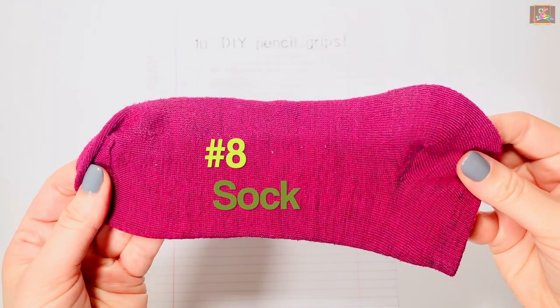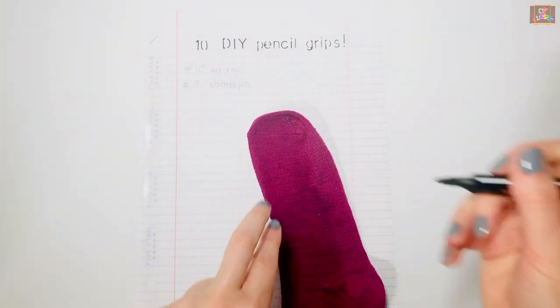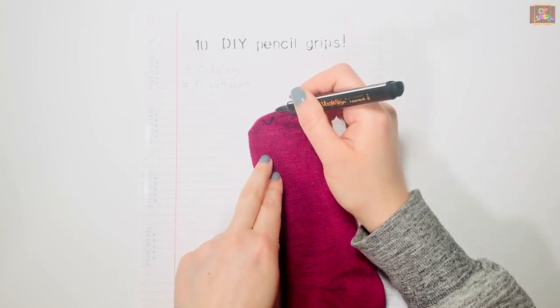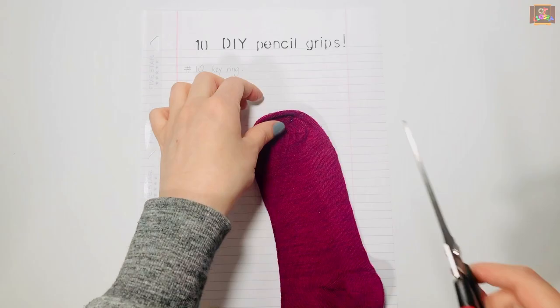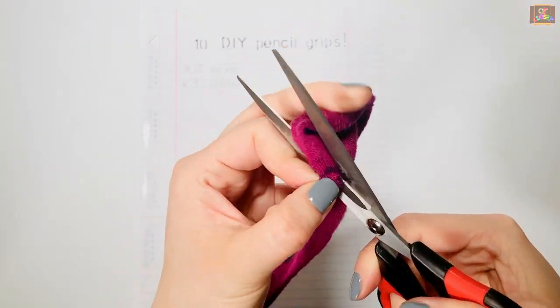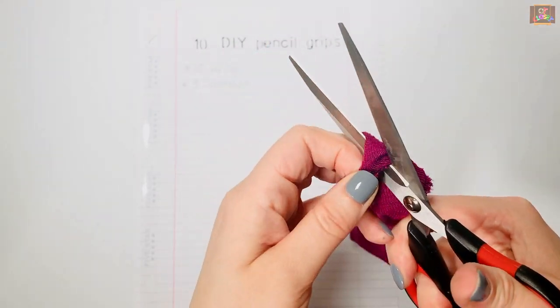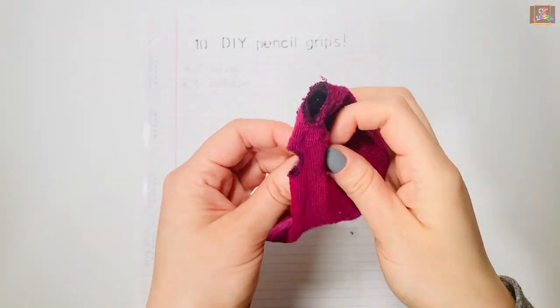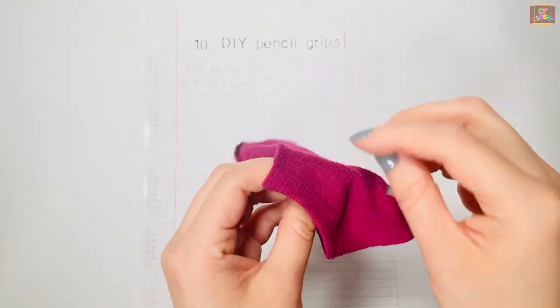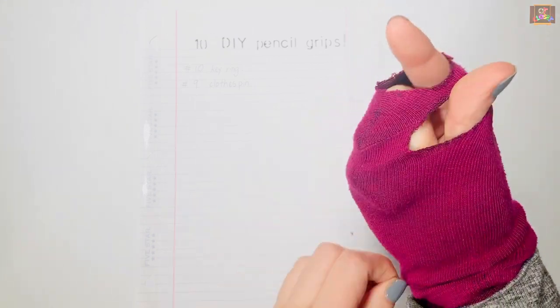Number 8: The Sock. Use the marker to mark the space for cutting. Use the scissors to cut out your holes. Thread the index and thumb fingers through the holes; the rest of the fingers are resting against the palm.